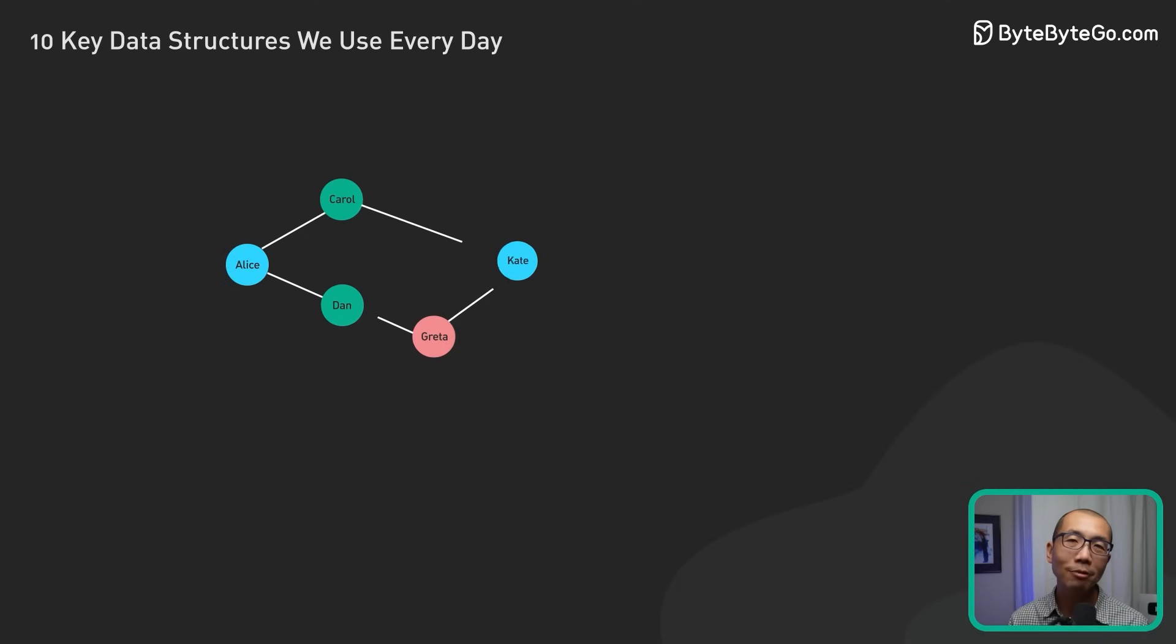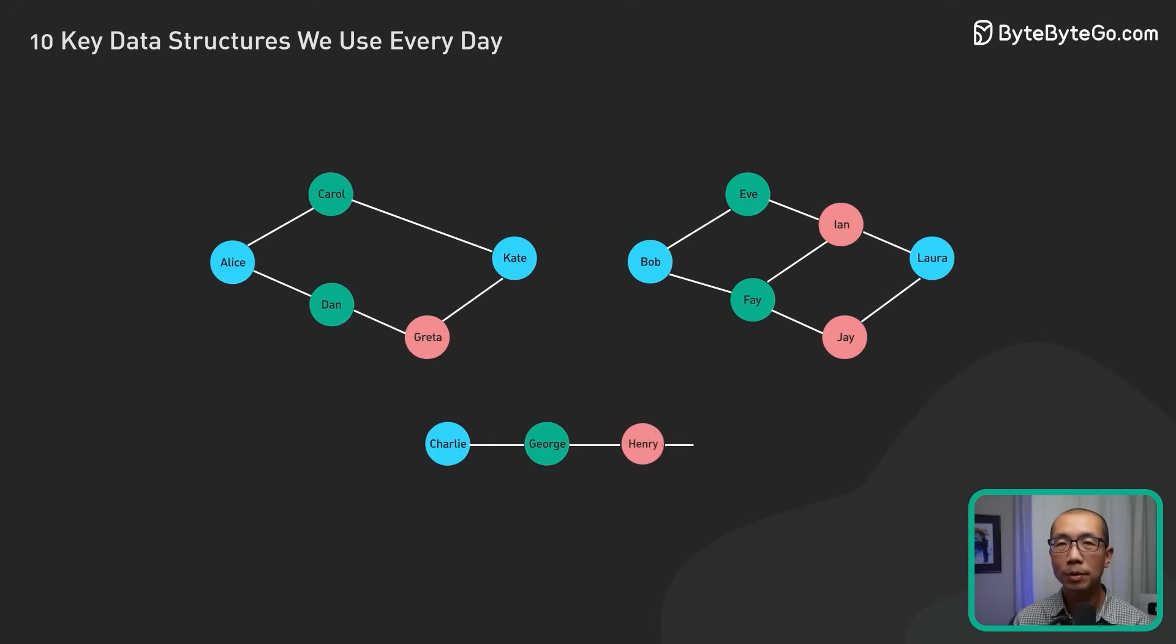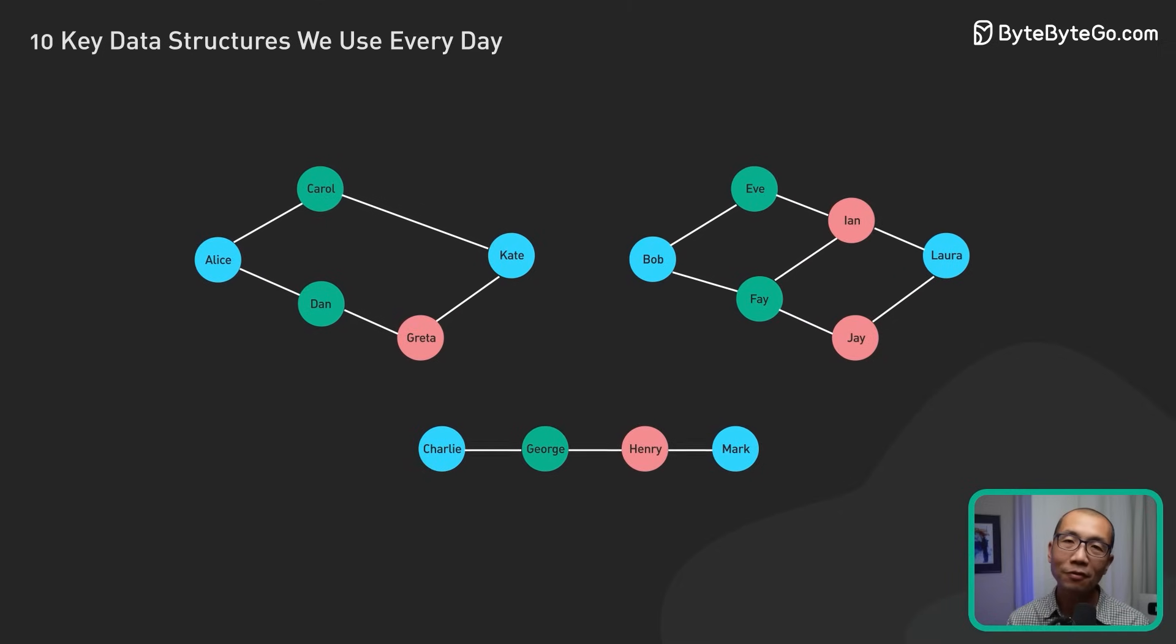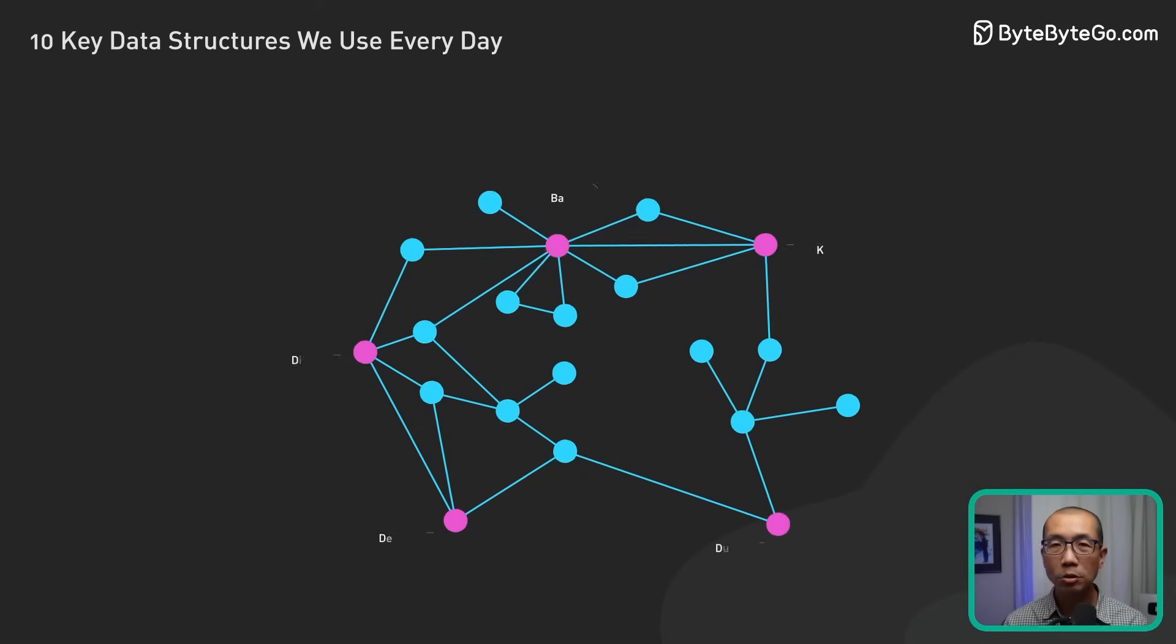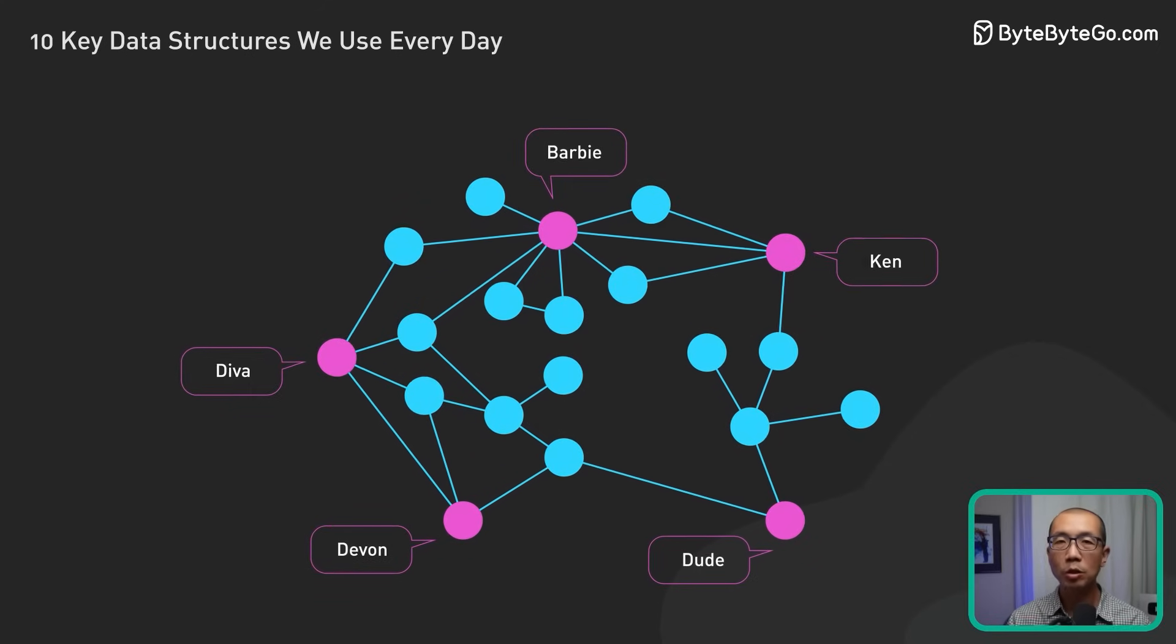Graphs are all about tracking relationships and finding paths. This makes them invaluable in social networks, recommendation engines, and pathfinding algorithms. In a social network, a graph can be used to represent the connections between users. It enables features like friend suggestions or analyzing network trends.